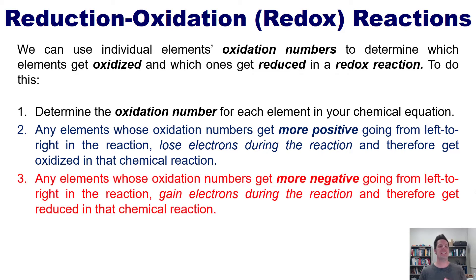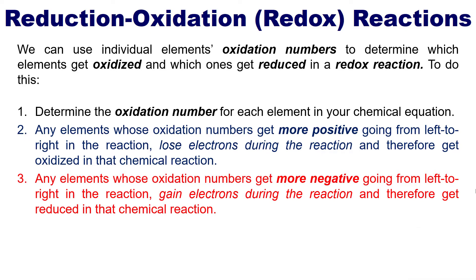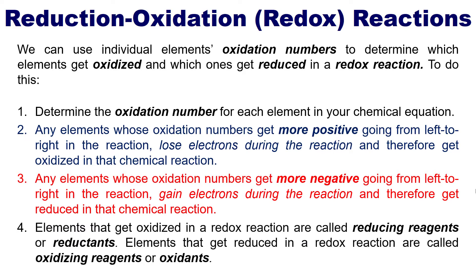In contrast, any elements whose oxidation numbers get more negative as you go from left to right in the chemical reaction are elements that gain electrons and therefore get reduced. Elements that get oxidized in a redox reaction are called reducing agents or reductants, while elements that get reduced are called oxidizing agents or oxidants.